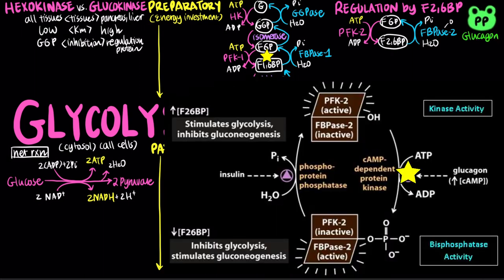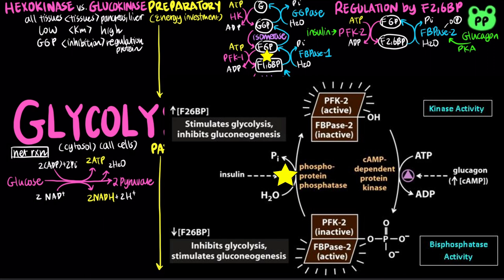Phosphorylation of this bifunctional protein by protein kinase-A, stimulated by glucagon, activates FBPase-2, which decreases fructose-2,6-bisphosphate and promotes gluconeogenesis. On the other hand, dephosphorylation of this bifunctional protein by phosphoprotein phosphatase, stimulated by insulin, activates phosphofructose kinase-2, which increases the concentration of fructose-2,6-bisphosphate and promotes glycolysis.